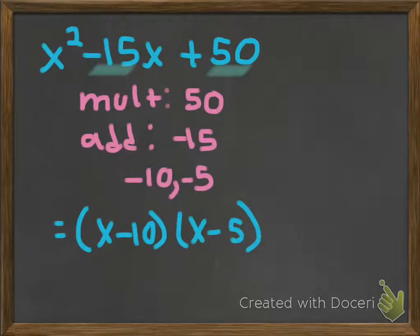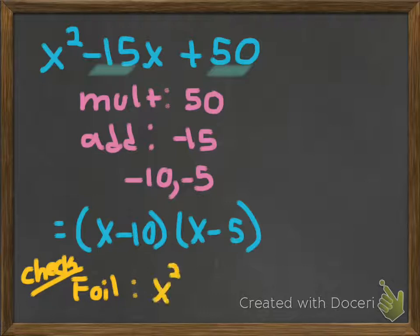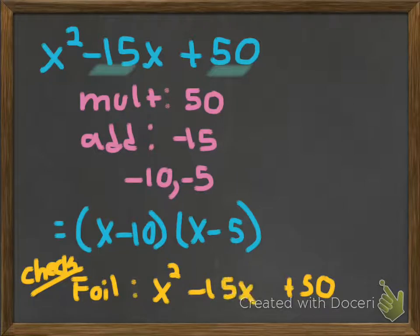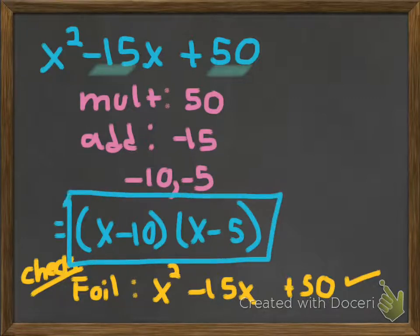One thing that you want to think about is if you wanted to check your work, you would FOIL to check your work. If I were to FOIL this, I would end up with x squared minus 5x minus 10x plus 50. Simplify that, and the middle two like terms can combine into negative 15x, which is the original question. So that's me checking my work, which means my answer is the factored version: x minus 10, x minus 5.